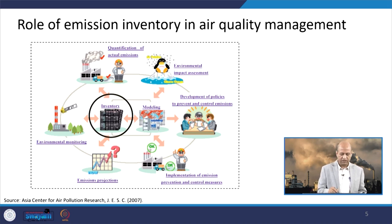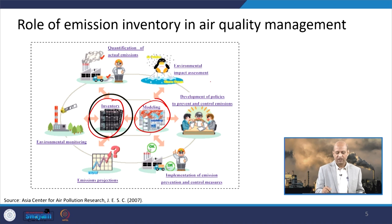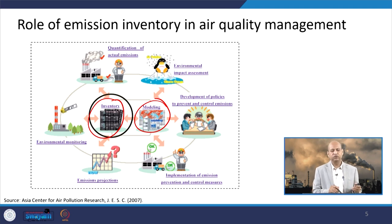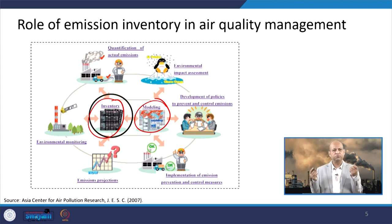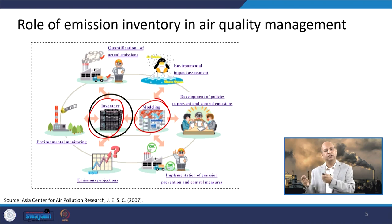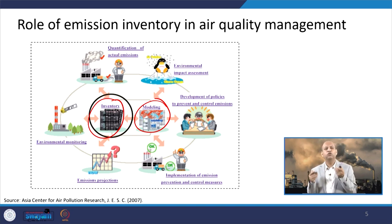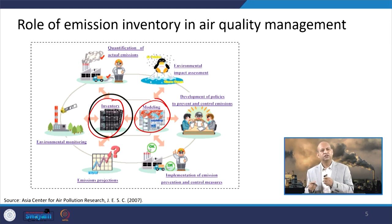The role of emission inventory in air quality management is depicted by a figure showing that modelling is related to inventory. Activities like quantification of actual emissions, environmental impact assessment, and development of policies to prevent and control emissions are interrelated. Emission inventory gives input values to modelling, and modelling gives ambient air concentrations. When you have a time series of emissions and ambient air concentration values, you can learn whether a particular pollutant is increasing or decreasing, and what changes in technology or fuel caused a reduction.